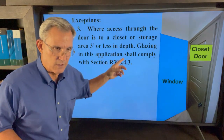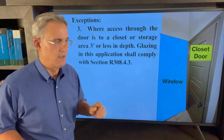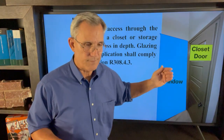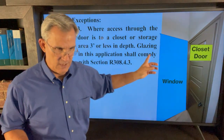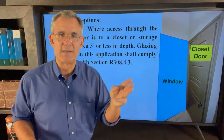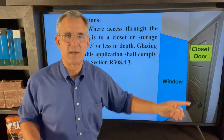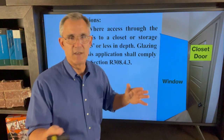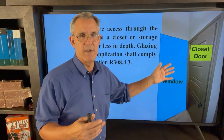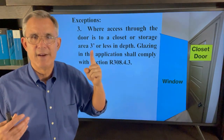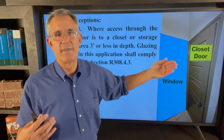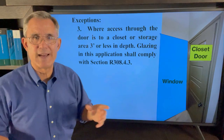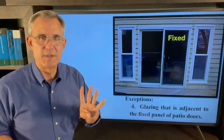Exception number three: access through a door to a closet or storage area that is three feet or less in depth. If you have a window next to a closet but the closet is less than three feet in depth, it doesn't have to be safety glass — though glazing in this application shall still comply with R308.4.3, which we'll cover in the next video. The idea is that with a walk-in closet, you could be coming out while someone else is coming in, they collide, and you go through the window. But for a closet less than three feet, they don't think people will be pushing the door open with enough force to cause that.